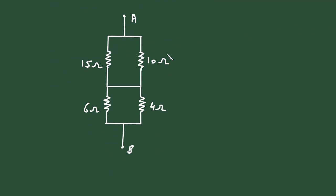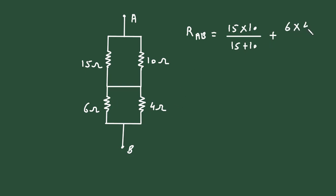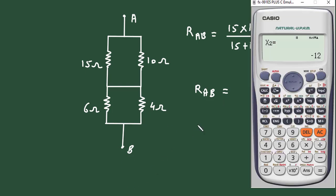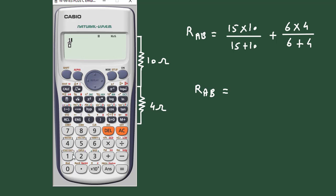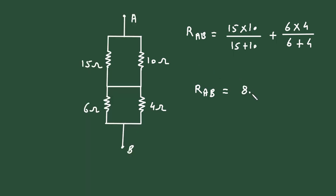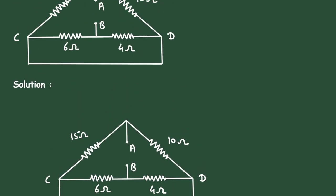Now we can easily simplify this. RAB is equal to 15 ohm in parallel with 10 ohm, so that is 15 multiplied by 10 divided by 15 plus 10, and it is in series with 6 and 4 in parallel, so it will be 6 multiplied by 4 divided by 6 plus 4. Therefore, RAB equals (15 × 10)/(15 + 10) plus (6 × 4)/(6 + 4), which gives 8.4 ohms. So this is the equivalent resistance RAB.